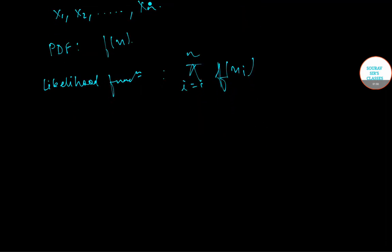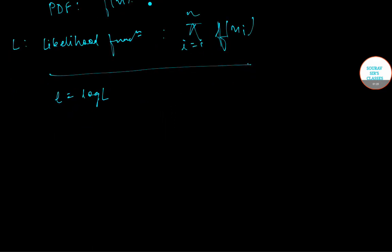Now, to find the MLE, we need to follow a certain procedure. First, we need to calculate the likelihood function — let me represent this by L. Then we need to calculate the log of this likelihood function. Let me represent small l to be equal to log of capital L.